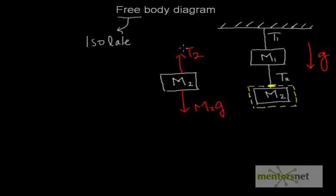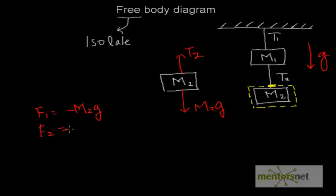This is now the complete free body diagram of M2 — a body isolated from the bigger system with all acting forces written down: M2·G and T2. It's now a simple force balance. Taking F1 = −M2·G (downward) and F2 = T2 (upward), force balance gives F1 + F2 = 0, so T2 − M2·G = 0, which gives T2 = M2·G.